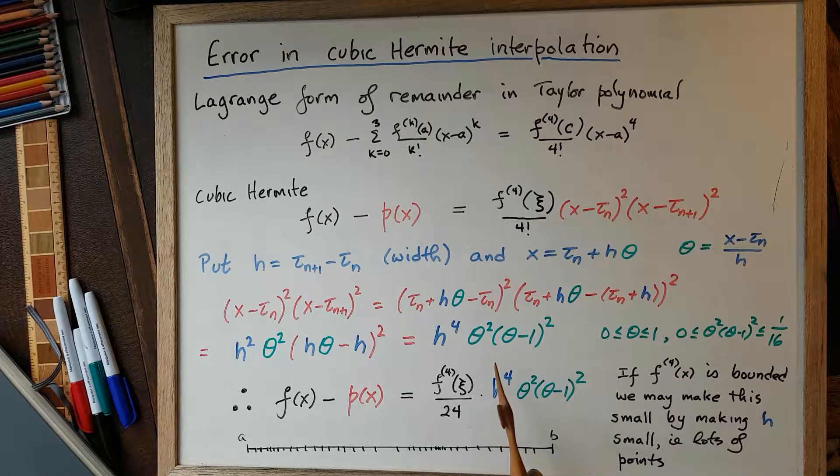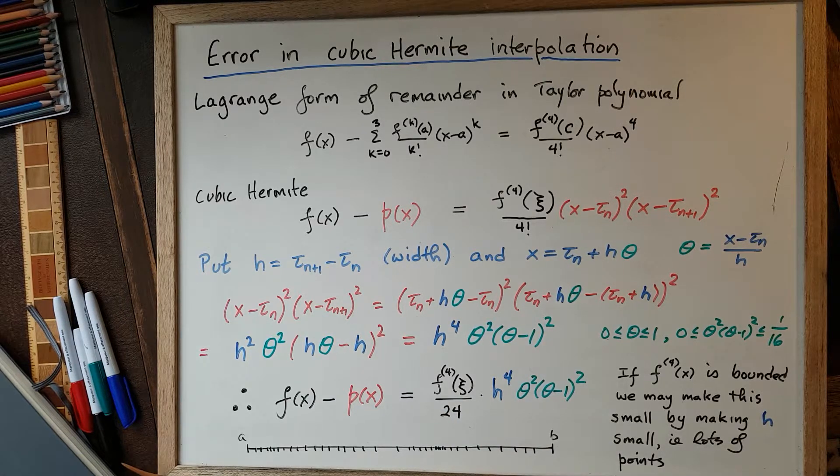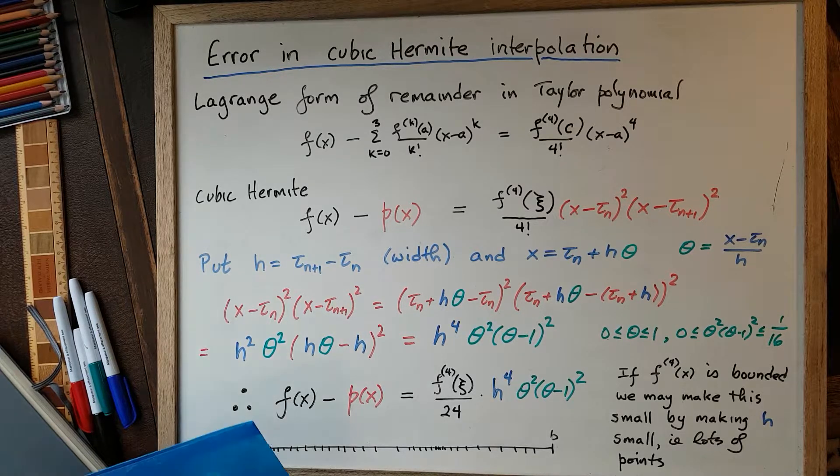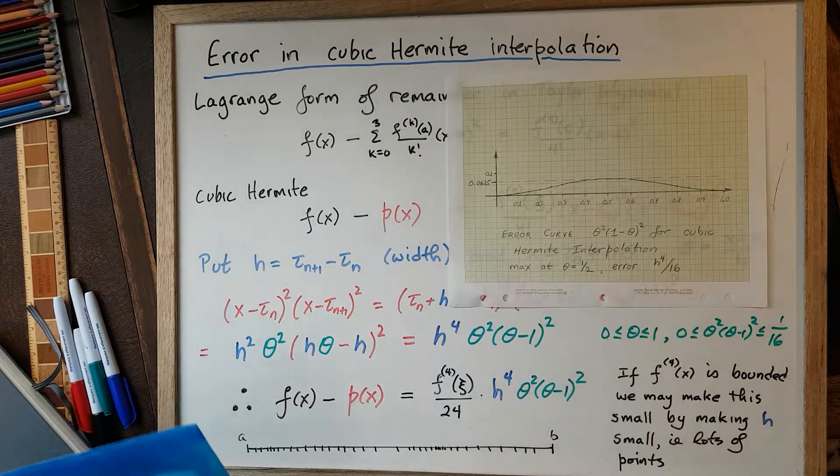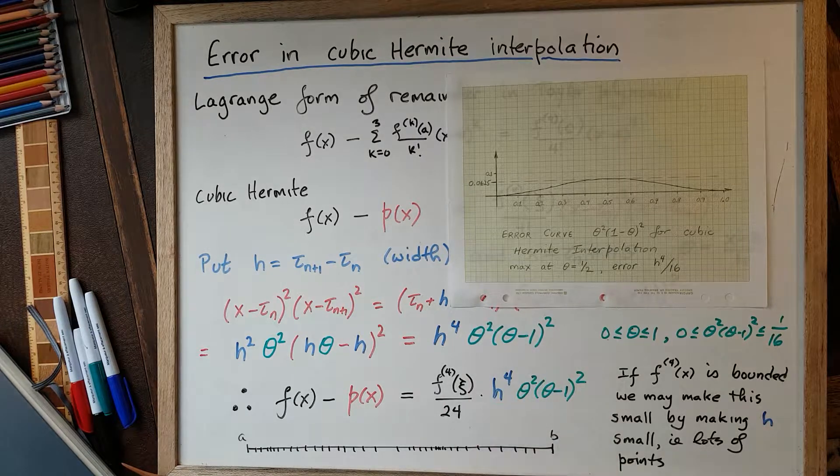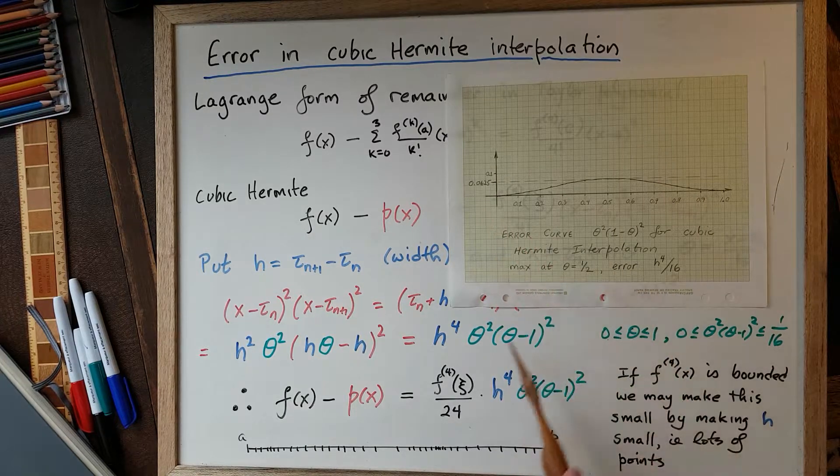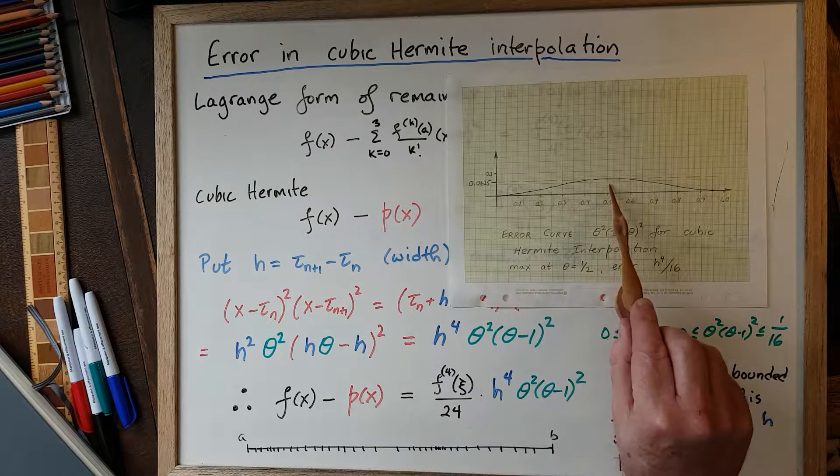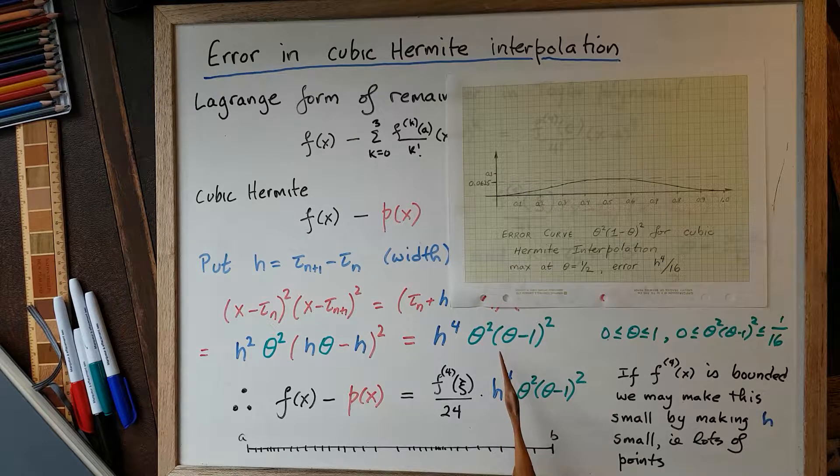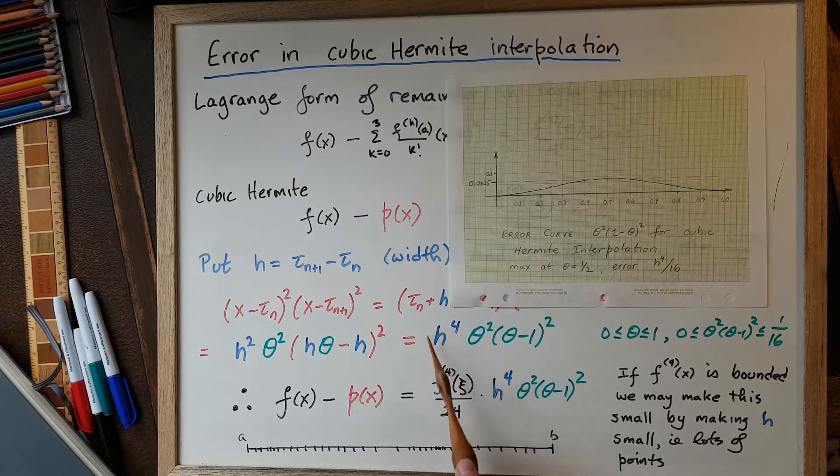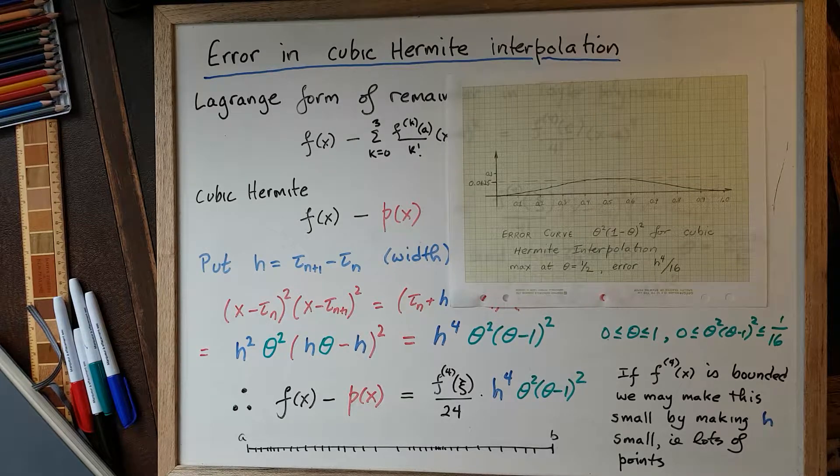And we already looked at the error formula on the interval from 0 to 1. I'm digging out of my pile of graphs from the previous. So there's the error curve for θ² times (1 - θ)². Obviously it makes no difference if I write it as (θ - 1)². And the maximum value of θ²(θ - 1)² occurs halfway, and the value is 1/16th. So on that interval, this node polynomial is less than 1/16th.